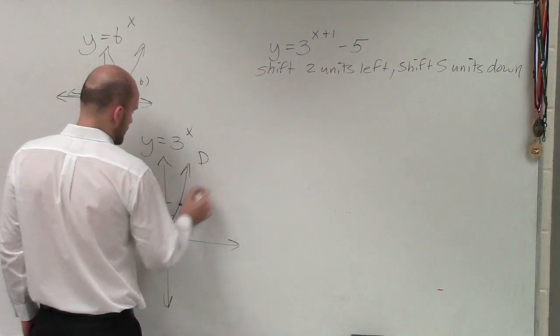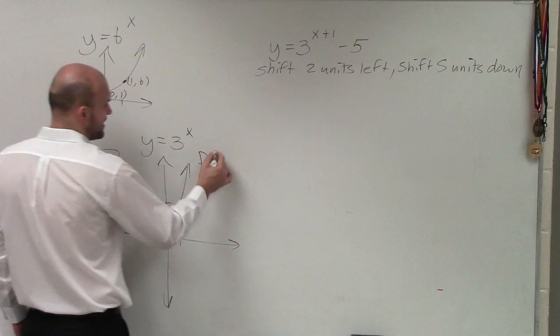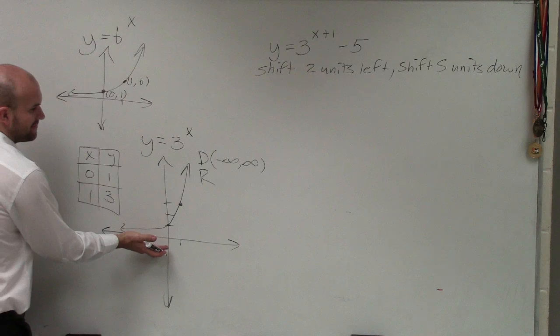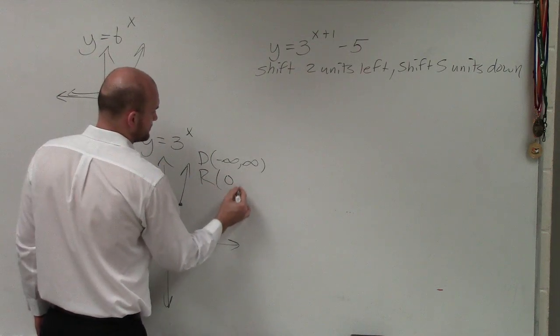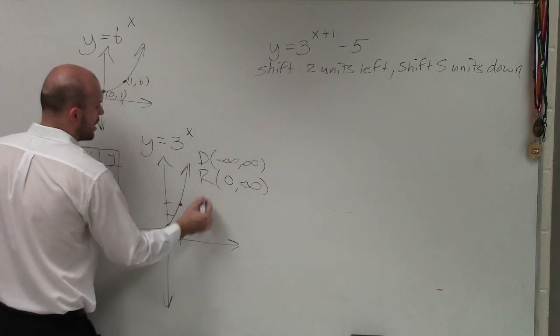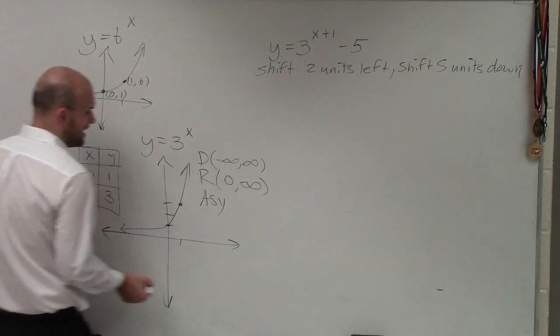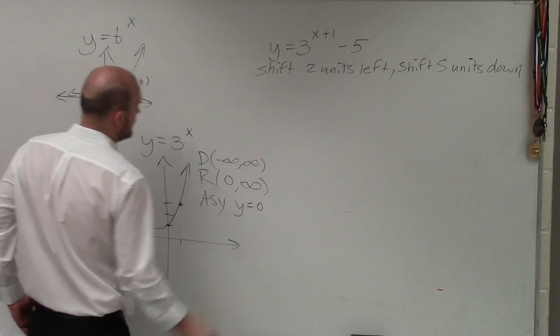Because we need to know that our domain is going to be the set of all x values, which is going to be from negative infinity to infinity. Our range, in this case, is going to be from 0 to infinity. And our asymptote, the line that our graph is going to approach, is going to be at y equals 0.